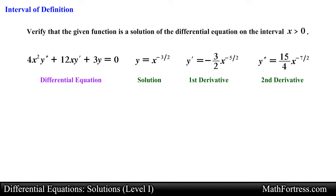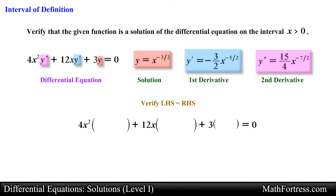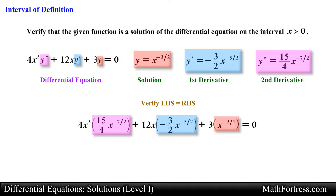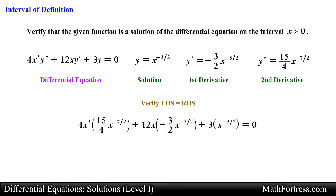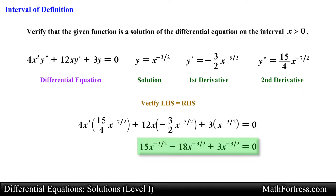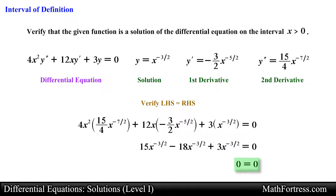Next we go ahead and substitute the function and its derivatives into the ODE, making sure we use parentheses when carrying out the substitution. Then we simplify the expressions and collect like terms on the left-hand side. Doing that we obtain 0 = 0. The left-hand side equals the right-hand side, hence the function is a solution of the differential equation.